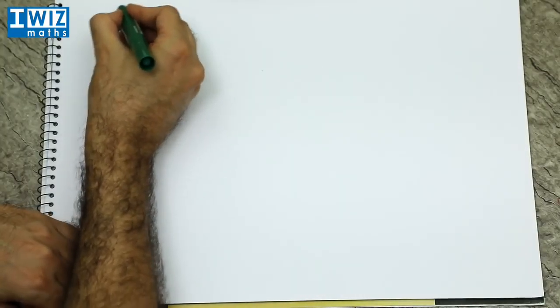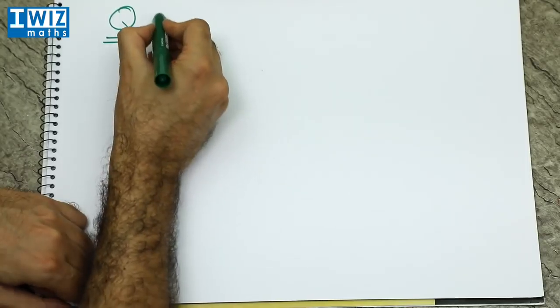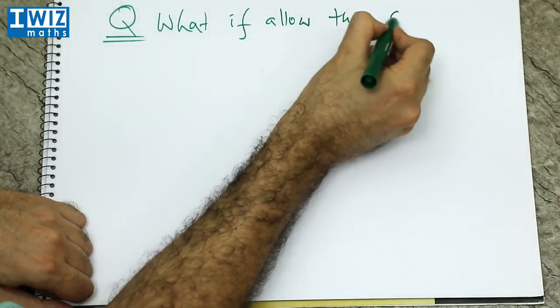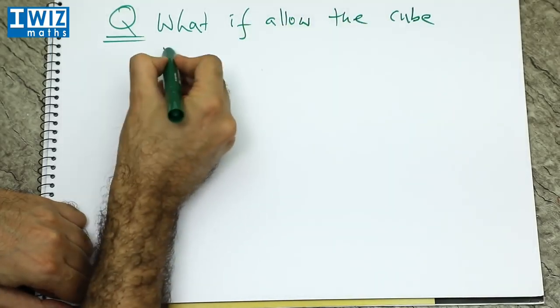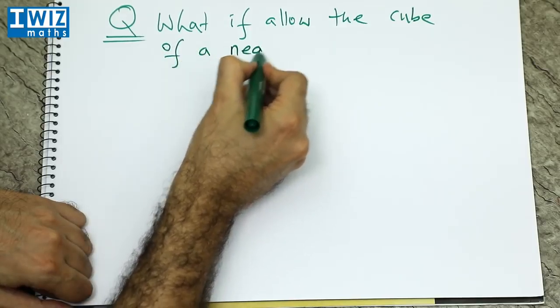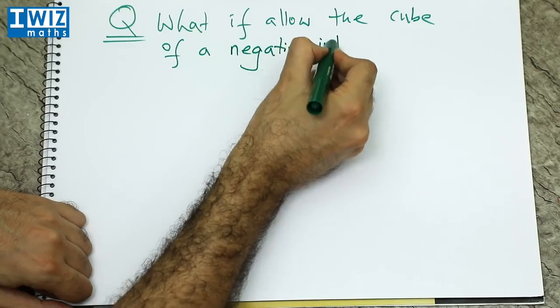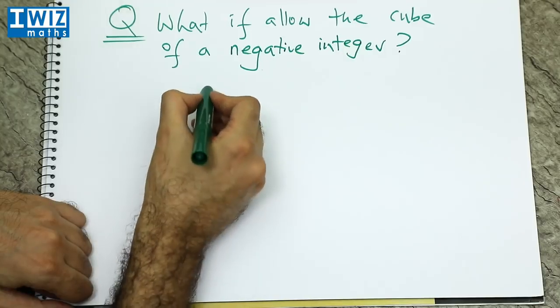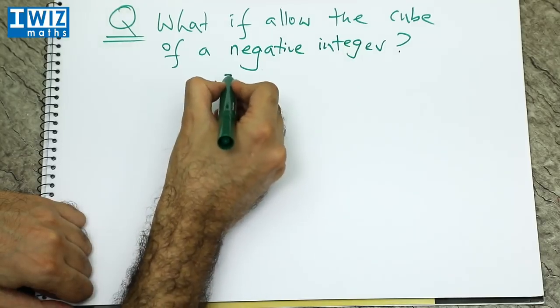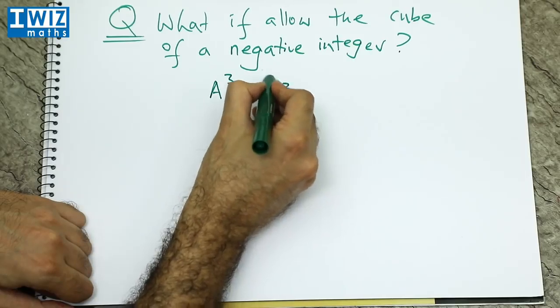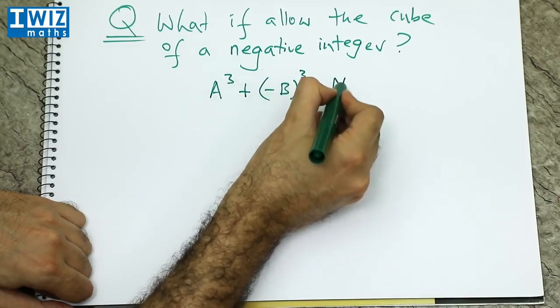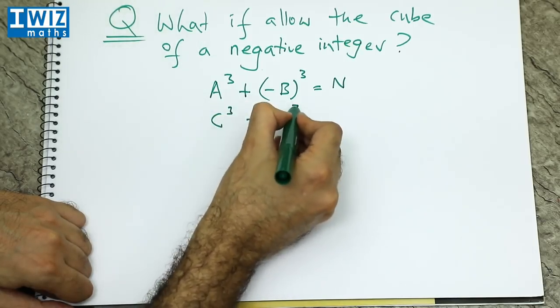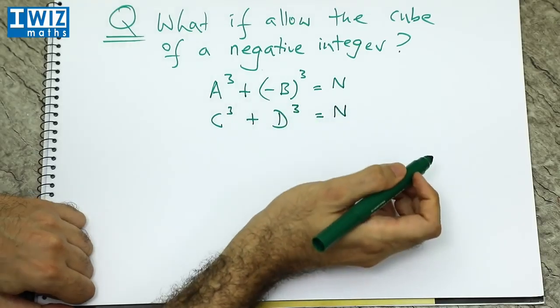Let's change the question a little bit. So the question is now the following. What if we allow the cube of a negative integer? So essentially what that means is we are saying that consider the following situation where you have A cubed plus minus B cubed and that equals a certain number and we have C cubed plus D cubed and that equals the same number.